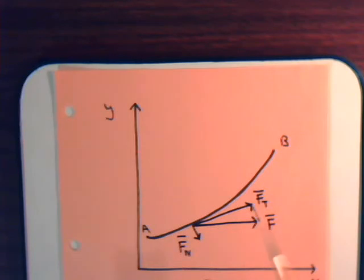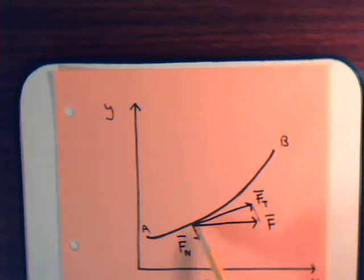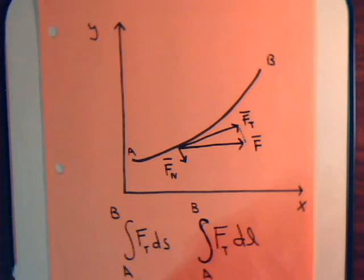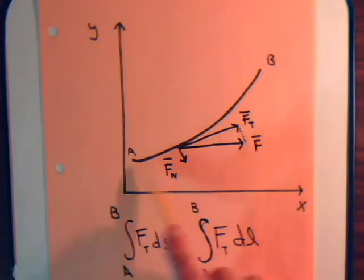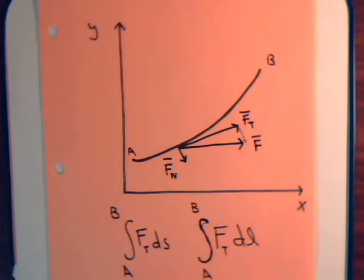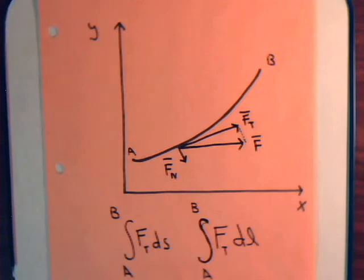Imagine taking the magnitude of the tangential component of the force and multiplying it by the differential line segment ds that it is parallel to, or tangent to. Then imagine doing that for each point along the curve — take the tangential component of the force at that differential line segment ds, multiply it by ds, and then add all of them up from A to B. That's what a line integral is all about.